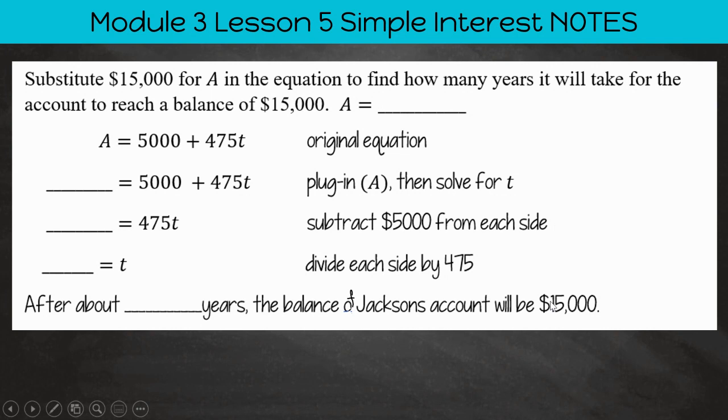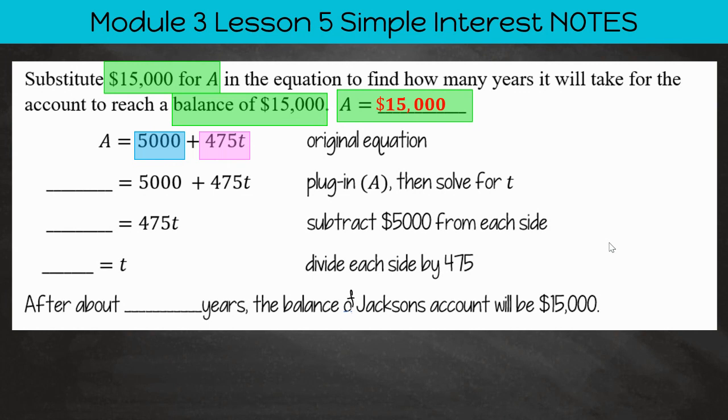So we're going to substitute in $15,000 for A in the equation to find how many years it will take for the account to reach a balance of $15,000. So we're just going to substitute $15,000 for the A value. Again, we already have our principal amount and our rate was already calculated into this equation.